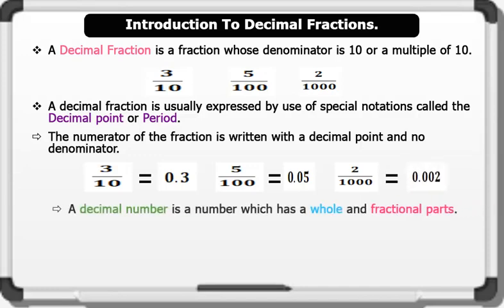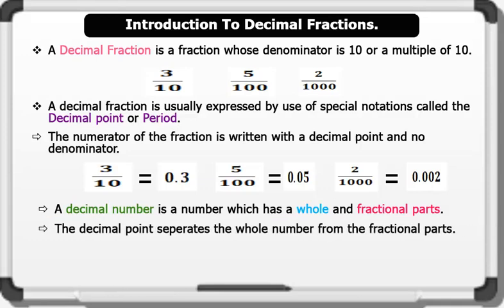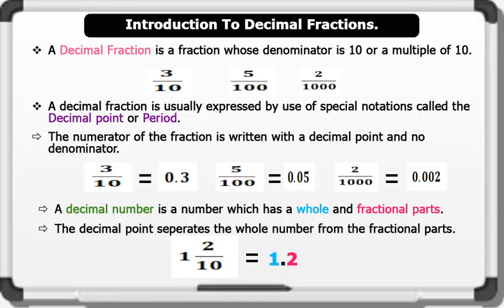A decimal number is a number which has a whole and fractional parts. The decimal point separates the whole number from the fractional parts. For instance, 1 and 2 over 10 is written as 1.2, where 1 is the whole number and 2 is the fractional part.